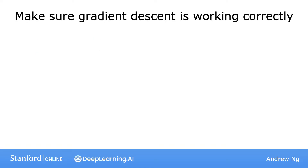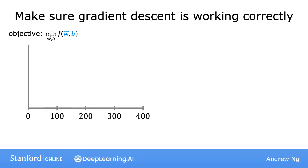Here's something that I often do to make sure that gradient descent is working well. Recall that the job of gradient descent is to find parameters w and b that hopefully minimize the cost function J. So what I'll often do is plot the cost function J, which is calculated on the training set, and I'll plot the value of J at each iteration of gradient descent. Each iteration means after each simultaneous update of the parameters w and b. The horizontal axis is the number of iterations of gradient descent that you've run so far, and you may get a curve that looks like this.